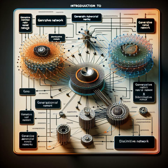The key components of generative adversarial networks are the generator and the discriminator. The generator's role is to create new, synthetic data that mimics real-world data, trying to generate data convincing enough to be considered real by the discriminator. On the other hand, the discriminator acts as a judge, evaluating whether the data presented to it is genuine from the actual data set or produced by the generator.